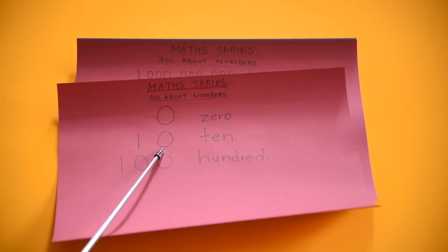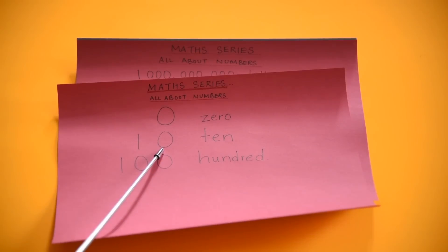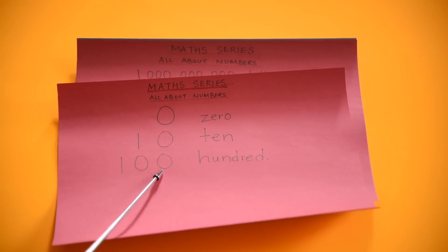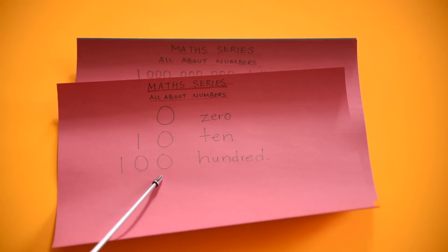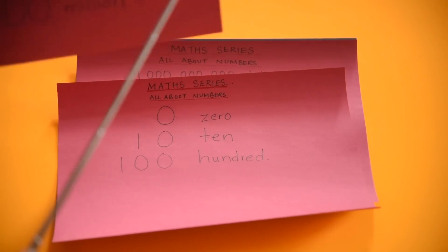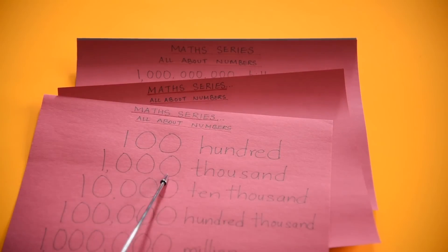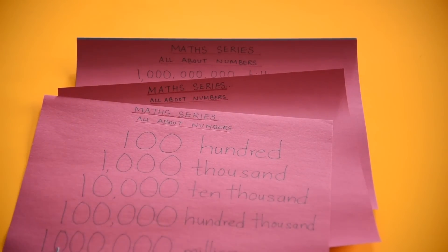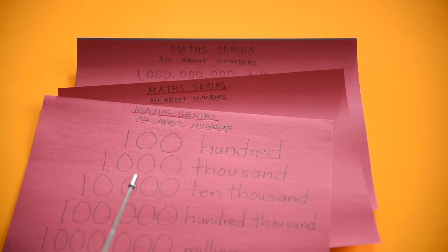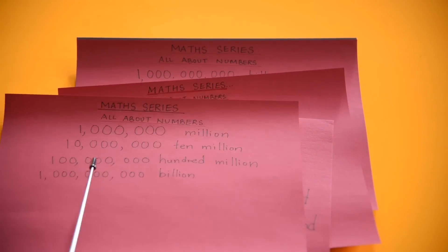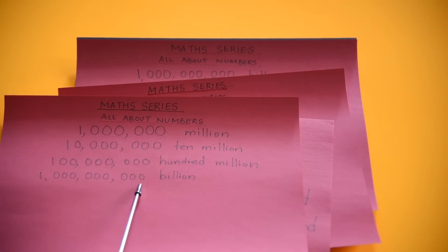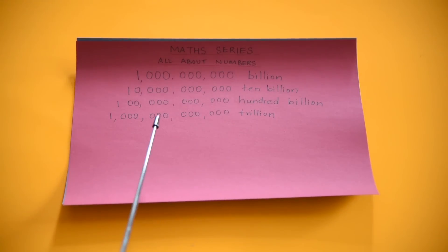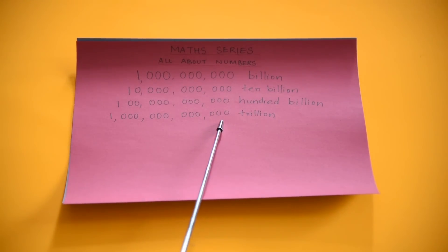Ishaan, can you tell me how many zeros does ten have? One zero. Hundred has? Two zeros. Thousand has? Three zeros. Million? Six zeros. Billion has? Nine zeros. And trillion has? Twelve zeros. Great job!